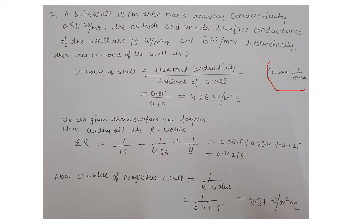Now we calculate the U value of the composite wall. We add all the R values of all surfaces. Then, taking 1 divided by the total R value gives us the U value. Remember: we must add only R values — sigma R is the sum of all R values of the components. The R value is obtained by putting the U value into the formula. This is how we solve questions involving U value and R value.